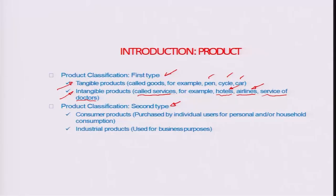The second classification is based on who the buyers or users are. There can be products bought by individual users for personal or household use — these are known as consumer products or consumer goods. Then there are industrial products, which are developed for large-scale application and mostly used for business purposes, such as a gantry lift, a forklift, or a roller conveyor on a mass production line. These are products used on a large scale by industry houses manufacturing at a very high rate.